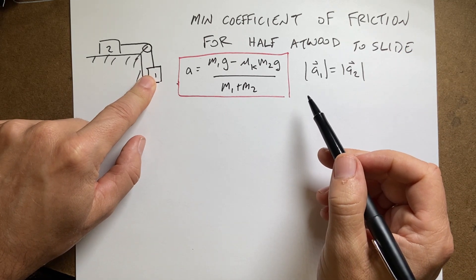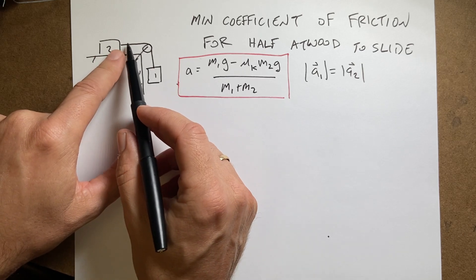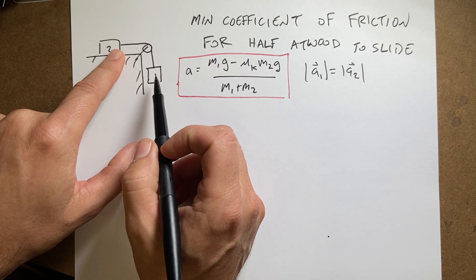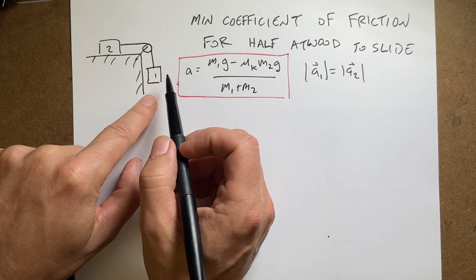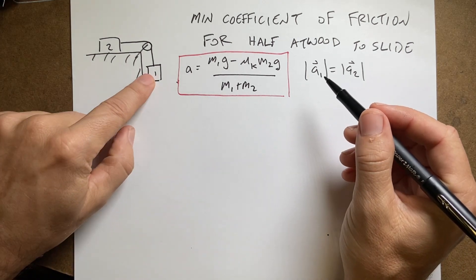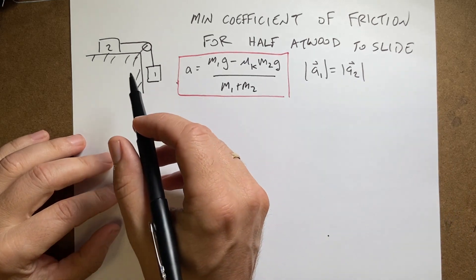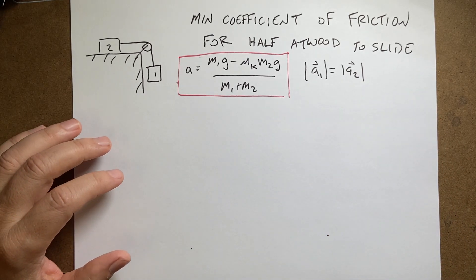This says that the acceleration of this block has to equal the acceleration of that block in magnitude. Because if the string doesn't stretch, then as this one moves that one has to have the same velocity. Since the acceleration depends on the change of velocity, the acceleration magnitude has to be the same. They could have different directions, but in this case we're looking at where it's zero acceleration.